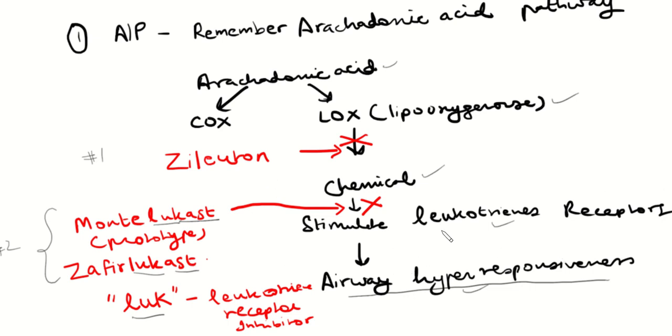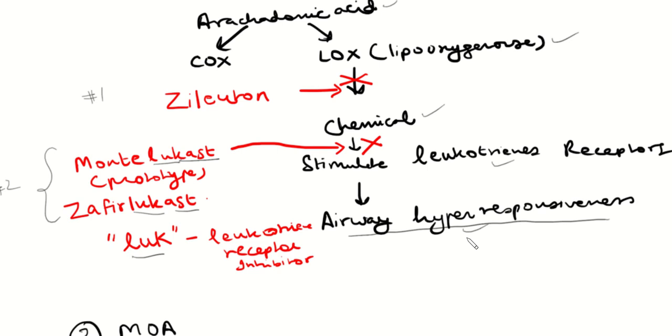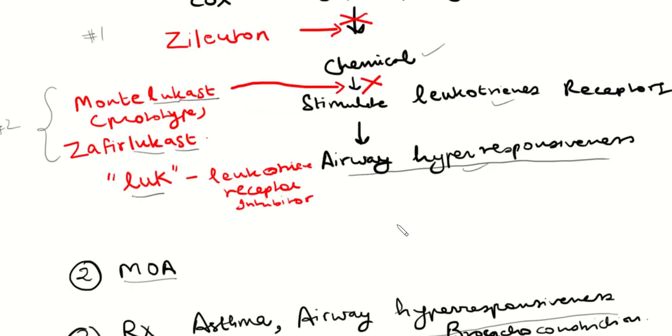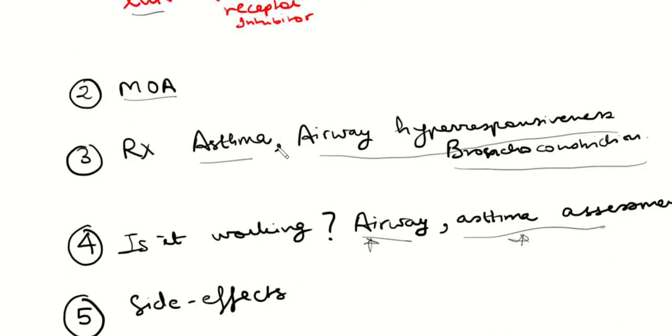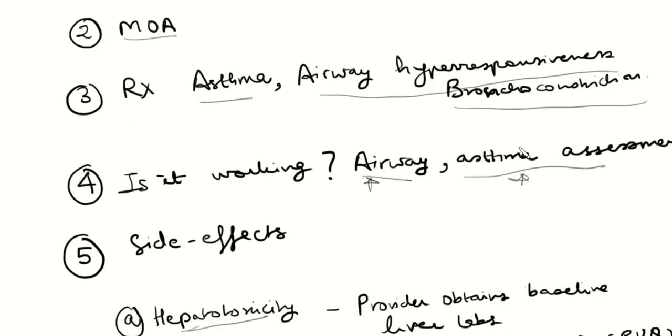Both drugs do the same thing. Essentially, once the leukotriene receptors are stimulated, the airways become very hyperresponsive and you have bronchoconstriction. We don't want that. So with these drugs, we prevent the receptors from getting stimulated and the airways dilate. And so in diseases like asthma, this is very helpful.